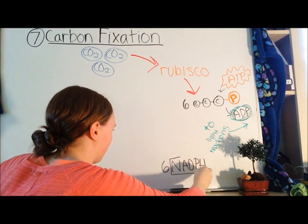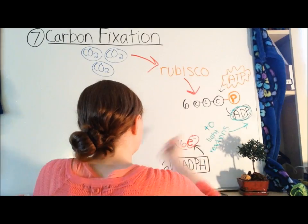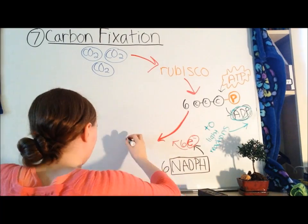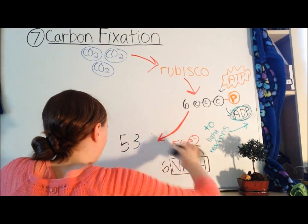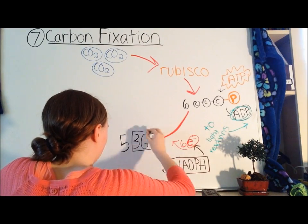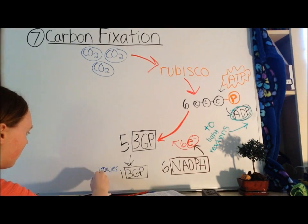The next step is step eight, reduction. Six molecules of NADPH from the light reactions each donate an electron to one of the three-carbon molecules, now called G3P. One of these molecules leaves the cycle. And the NADPH cycle back to the light reactions as NADP+.